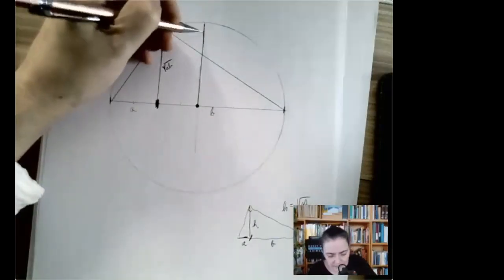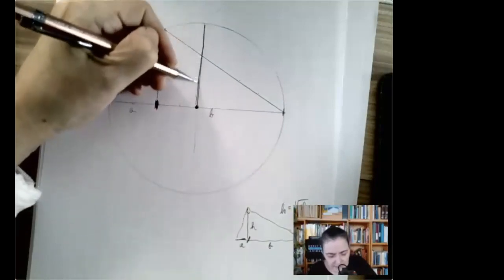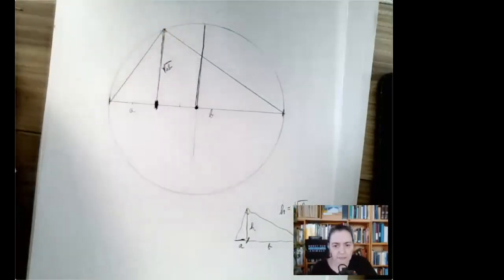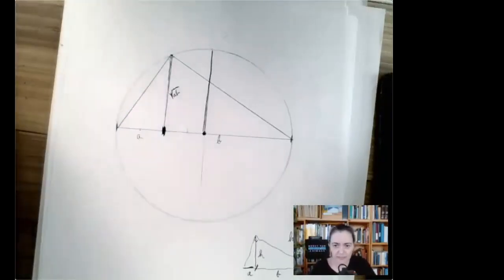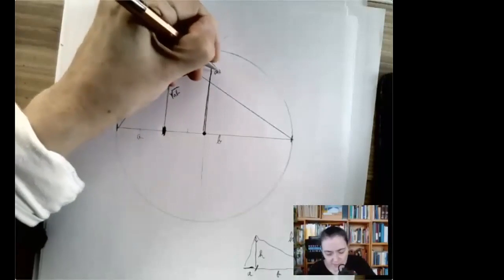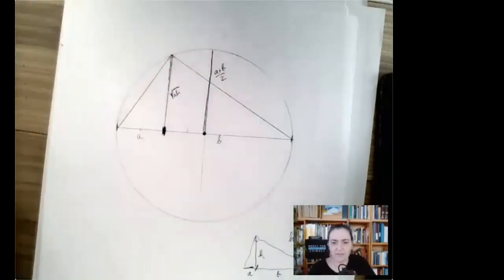Now, what about this line segment here? This line segment here is the radius. The radius is half of the diameter, but the diameter is A plus B. So this is A plus B over 2, the arithmetic mean.